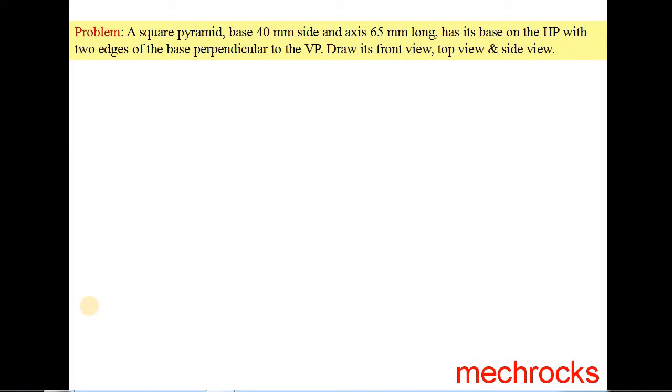Hi friends, welcome to Mechrocks. Today we will discuss Projections of Solids. In this we will discuss about square pyramid. A square pyramid base 40mm side and axis 65mm long. It is base on the HP with two edges of base perpendicular to VP. Draw its front view, top view and side view. The given square pyramid base side 40mm and axis length 65mm, base is on the HP.